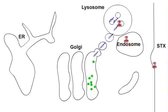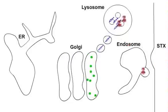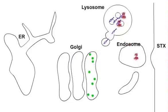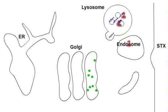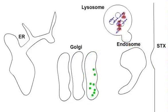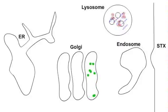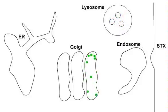In the absence of GPP-130, the shigatoxin has no receptor to bind in the endosome, and so it also moves to the lysosome and gets degraded. This protects the cells from invasion by shigatoxin and cell death.